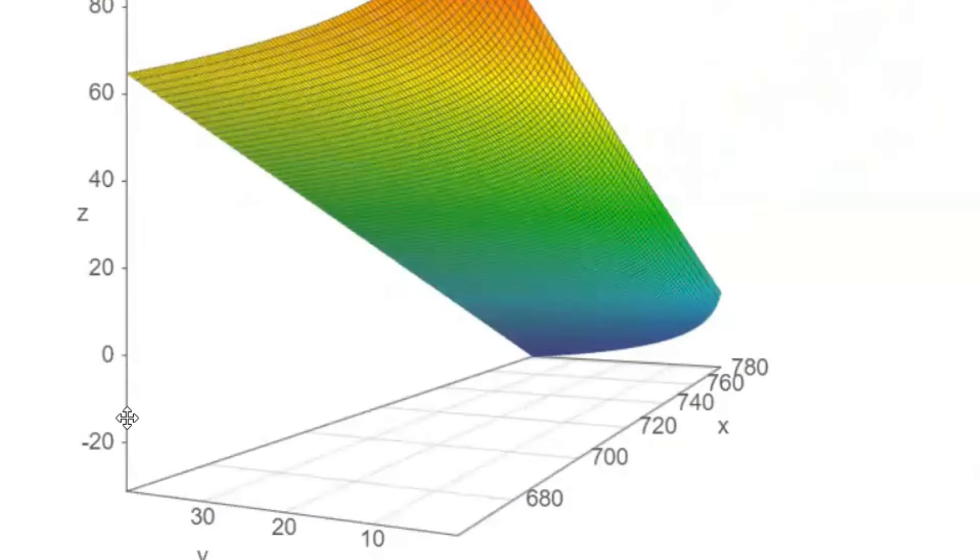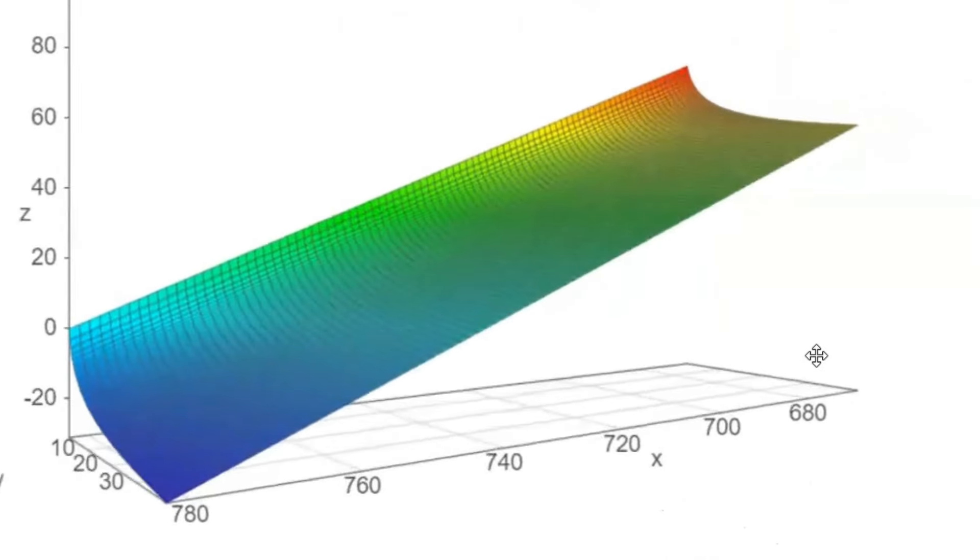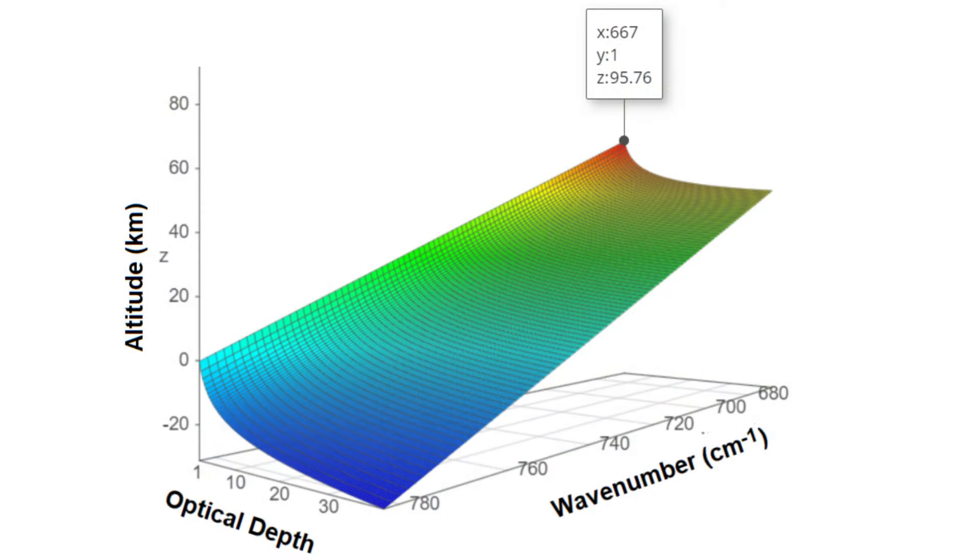It is basically a linear equation if optical depth is fixed as one. Following those climate researchers for time being, let's call z as emission altitude. If you look at the cross-section at tau equal to 1, you can't miss the linear dependence of altitude on wave number. Can you see it?